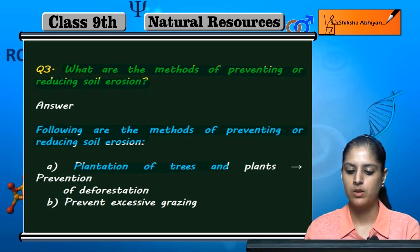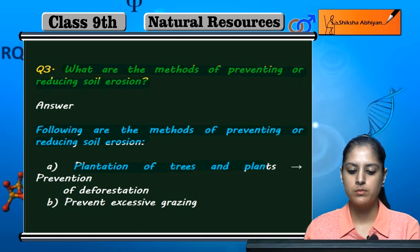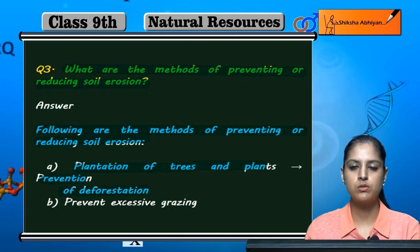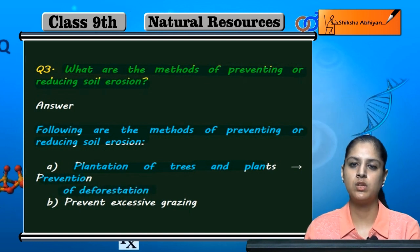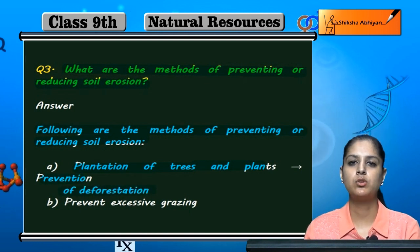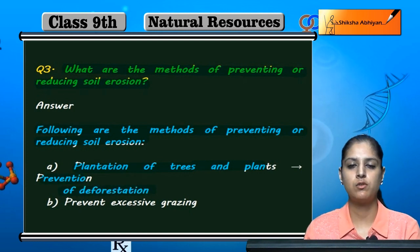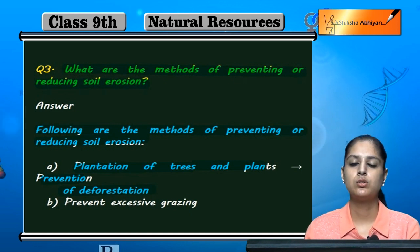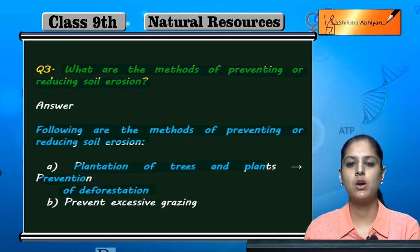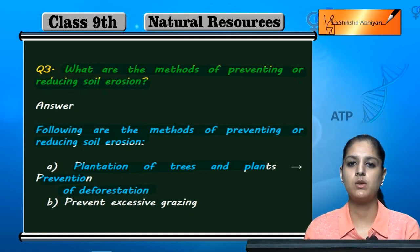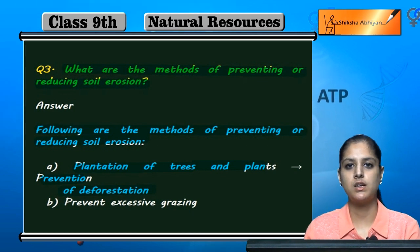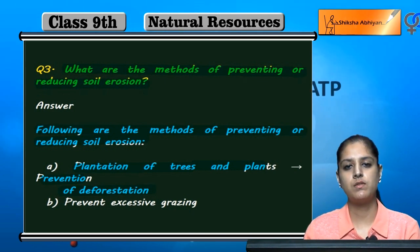If we plant many trees, stop deforestation, and prevent the cutting of trees, the roots of the trees will bind the soil, and the washing away or blowing away of soil will be reduced.